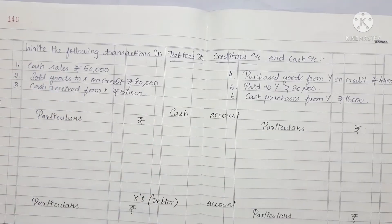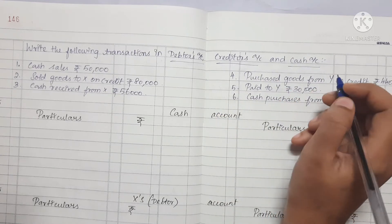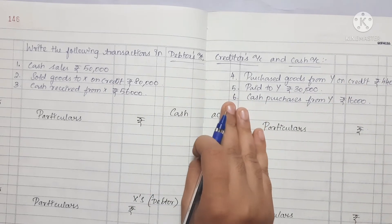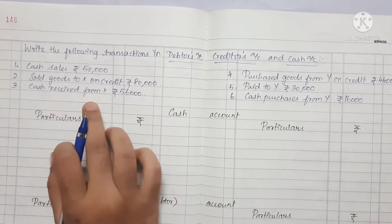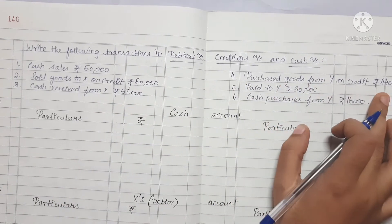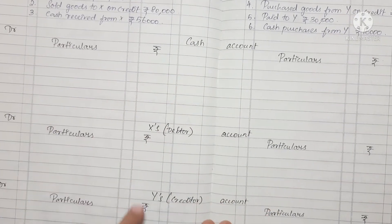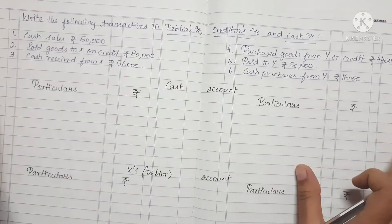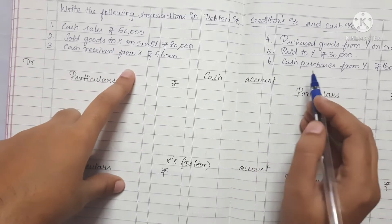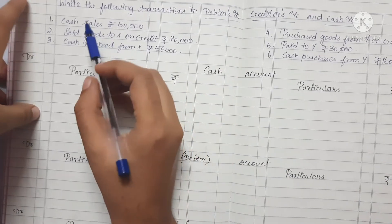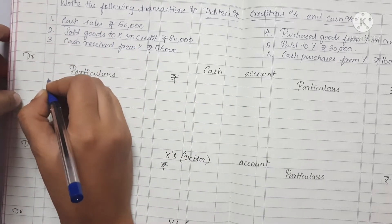Now we will explain the next sum. We will work on the moon account — that includes the Debtors account, Creditors account, and Cash account. We have the following transactions totaling Rs. 50,000 to start. Like account — Debtors, Debit, Credit — the format shows increases and decreases on respective sides.